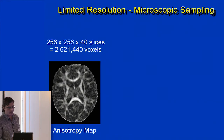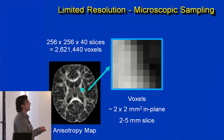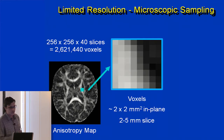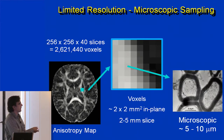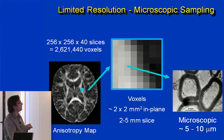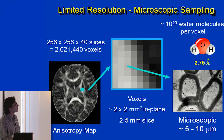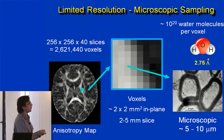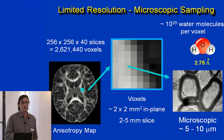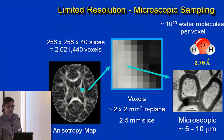An important thing to keep in mind: you have many voxels throughout your image, and resolution is quite coarse — maybe 2.2 mm² in-plane, 2 to 5 mm slices. But we're measuring what the water is doing at the microscopic level, and trying to infer from the intensity of these maps what's happening at the microstructural level. There are about 10²⁰ water molecules per voxel, so they all had better be doing something quite similar, because we're just measuring an average over all those water molecules in that voxel to get that intensity. It's a bit of a challenge for interpretation.